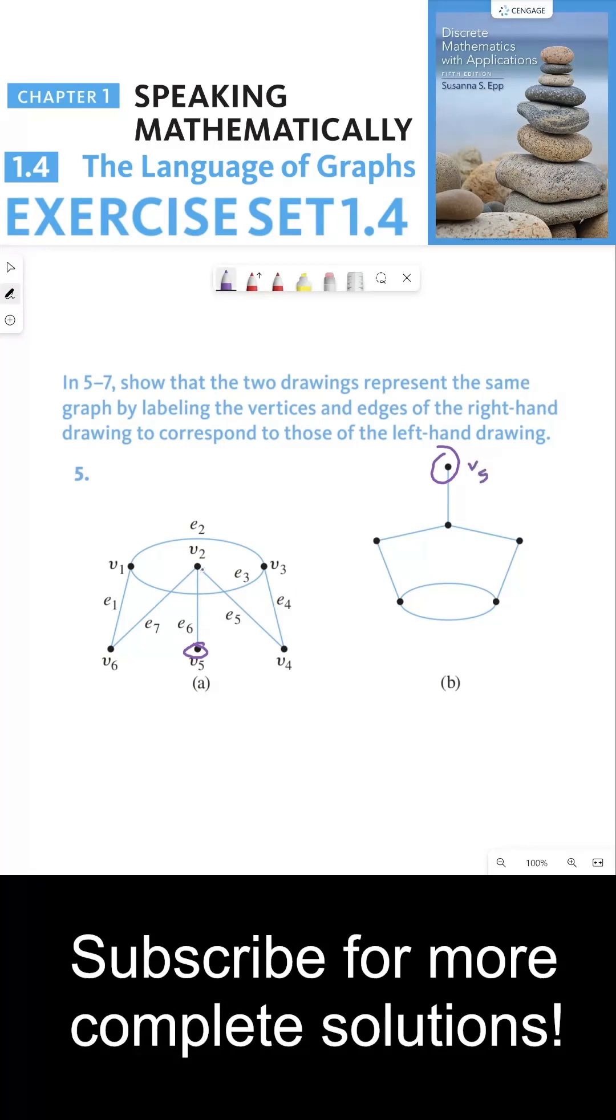v5 is connected to v2 right here, and so that would mean that v5 over here has to be connected to v2 over here, and that is by edge e6. v2 is connected to two vertices, v4 and v6, and this graph is also connected to two other vertices besides v5.